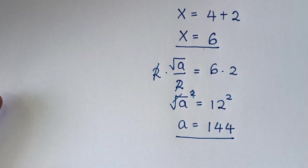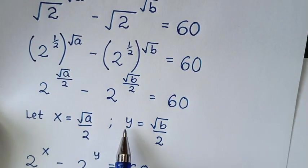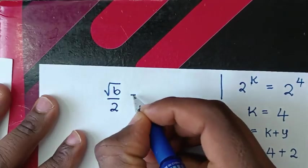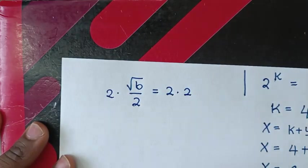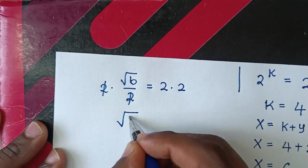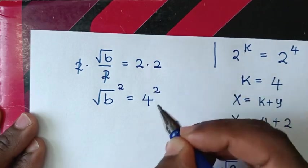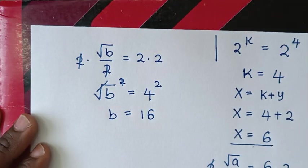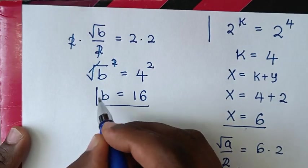Now to get the value of b: y equals 2, and y equals square root of b over 2. So square root of b over 2 equals 2. Multiplying both sides by 2, square root of b equals 4. Squaring both sides, b equals 4 squared, which is 16. So this is the value of b. Therefore a equals 144 and b equals 16.